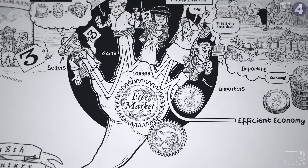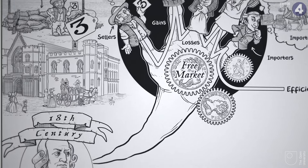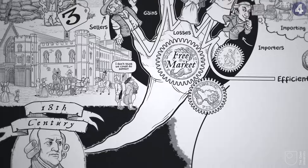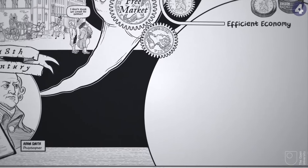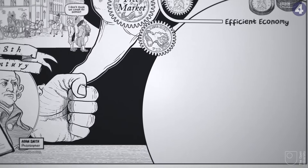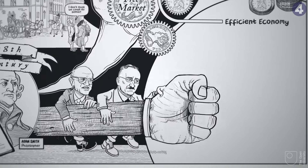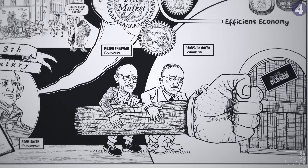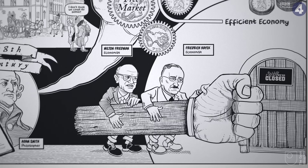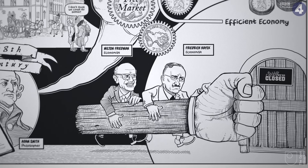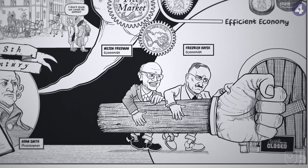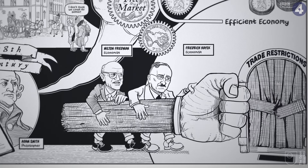And this, allegedly, is superior to any system the state could produce. More recent enthusiasts of free markets, such as Friedrich Hayek and Milton Friedman, have invoked the idea of an invisible hand as an argument against restrictions on trade.